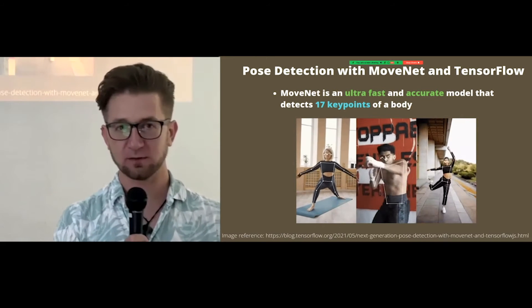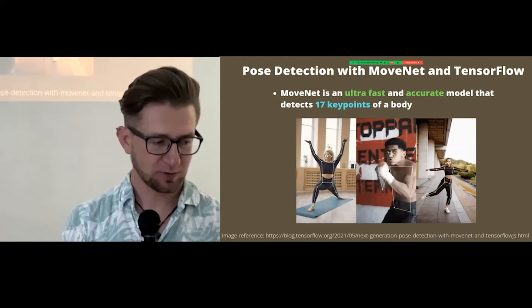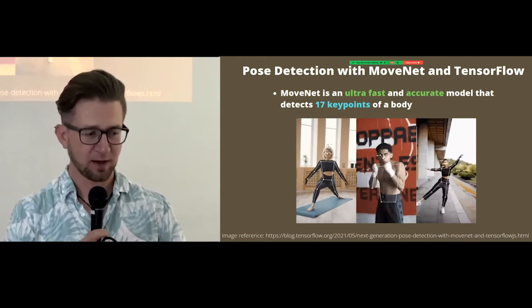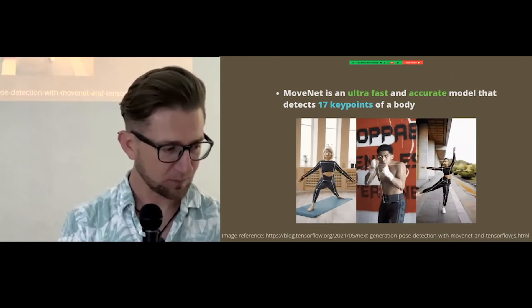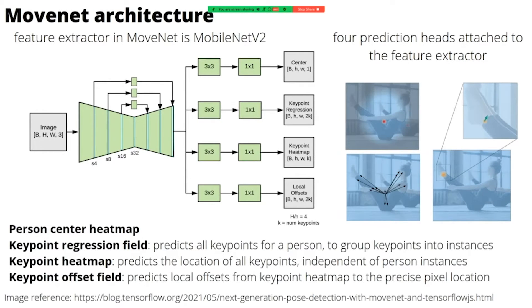Pose detection for the movements is done using MoveNet and TensorFlow. MoveNet is an ultra-fast and accurate model that detects 17 key body points. Its architecture uses a feature extractor called MobileNet version 2 — a lightweight convolutional neural network designed to run on smartphones — along with four prediction heads attached to the feature extractor, making keypoint detection both very accurate and very fast.